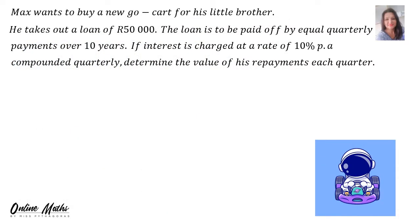When we calculate the outstanding balance on a loan, the question always consists of two parts. The first part is to work out X, the monthly or quarterly repayment. And then in the next sum, you will have to work out the outstanding balance on the loan. Now let's look at an example.